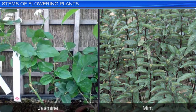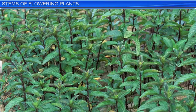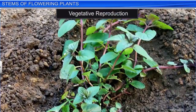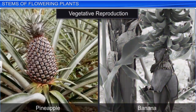In plants like jasmine and mint, slender lateral branches arise from the base of the main stem. Initially these branches grow aerially; later they bend to touch the ground and form a new plant. Therefore, these modified stems help in vegetative reproduction. Plants like pineapple and banana also have modified stems that perform vegetative reproduction.